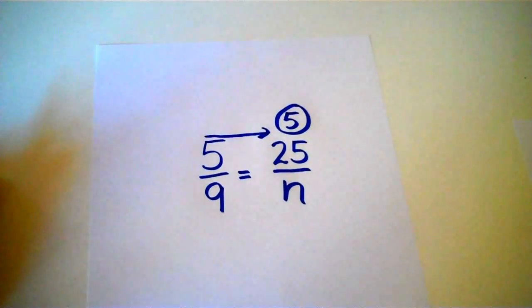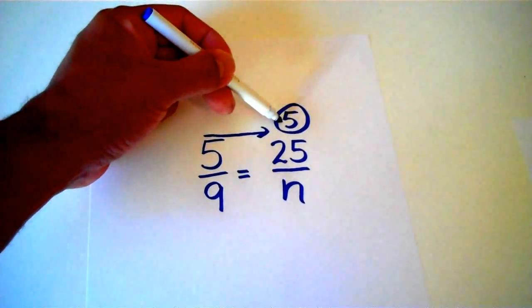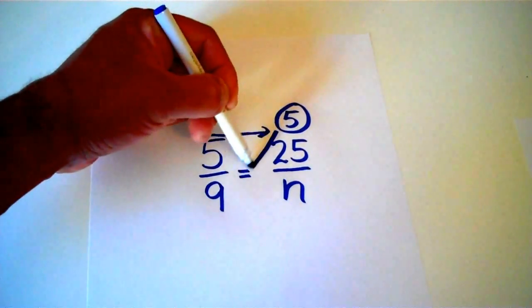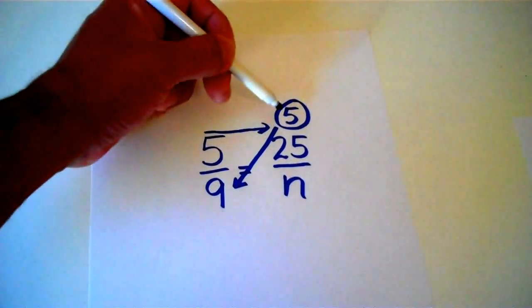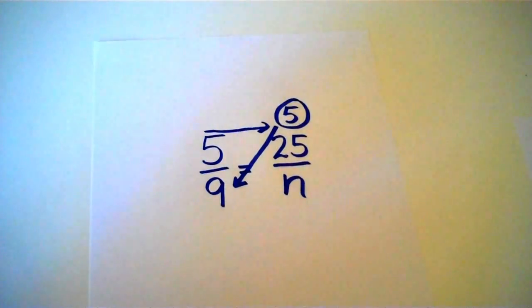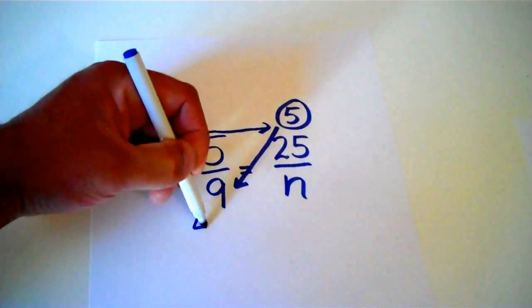And step 2 said, we're going to take our answer and multiply that diagonally by the remaining number. And 5 times 9 is 45! Great job!